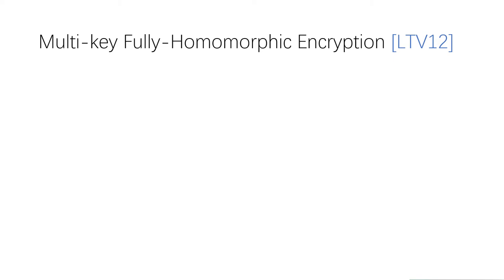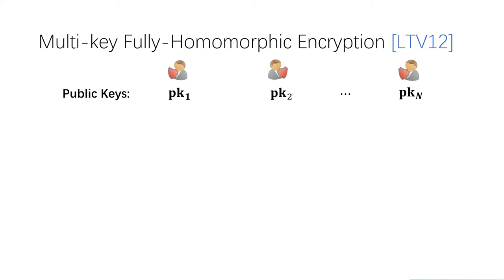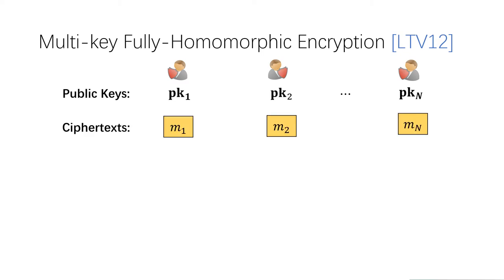The notion of multi-key fully homomorphic encryption was proposed in LTV12, and is defined as follows. Suppose there are n parties. Each party runs some key generation algorithm and obtains a public key and a secret key. Then each party outputs their public keys. Next, anyone with these public keys can use them to encrypt some messages into ciphertext.